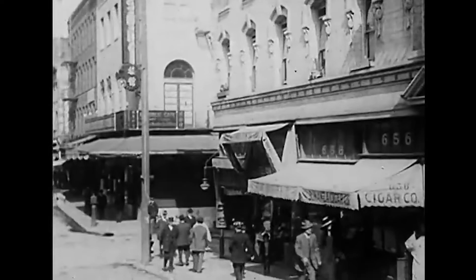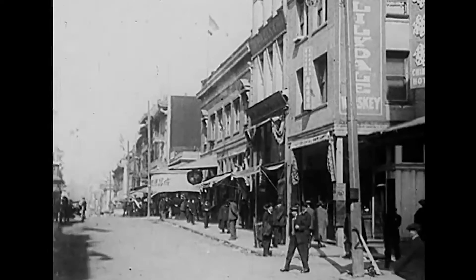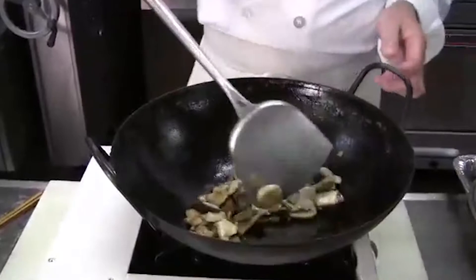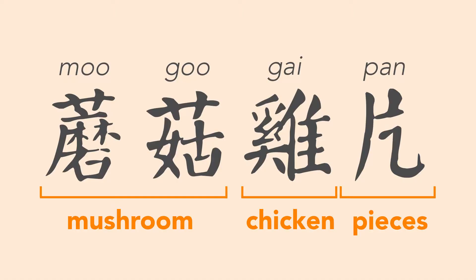Today we're going to take a quick linguistics lesson. How did Moo Goo Gai Pan get its name? Moo Goo Gai Pan is the romanization of four Chinese characters that mean mushroom chicken pieces.